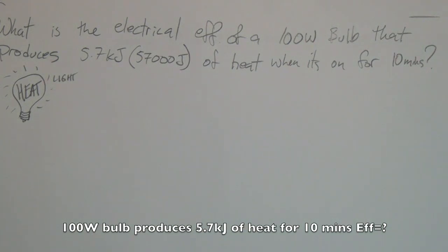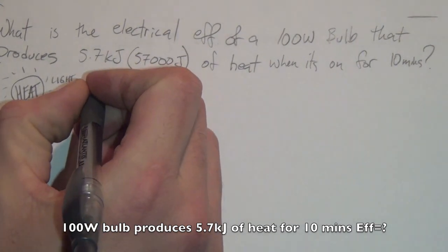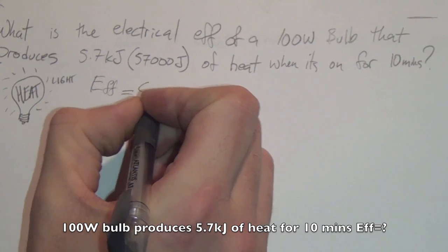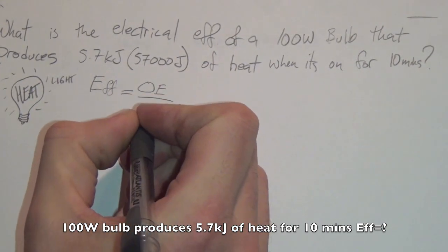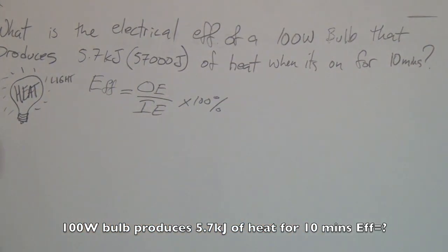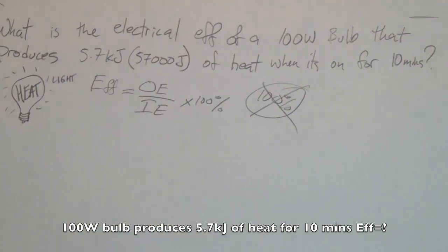So here we have an efficiency question. The reason these questions are confusing at times is in identifying parts of the formula — which is which? The formula is: electrical efficiency, denoted as F, equals the output energy over the input energy, times 100%. One thing you must remember is that no machine is 100% efficient — it just doesn't exist.